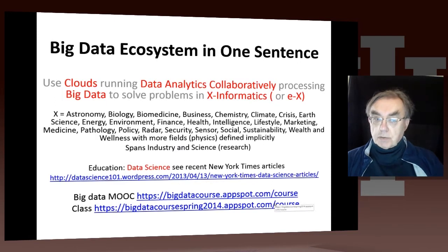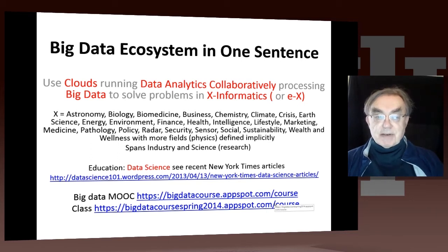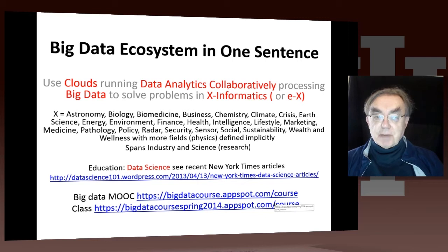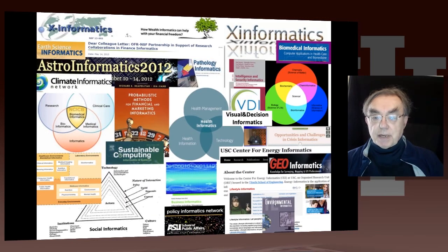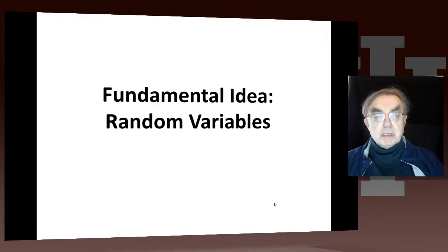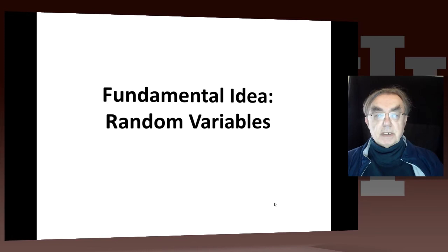As always, we're using clouds, running data analytics collaboratively, processing big data at 15 petabytes a year to solve problems in physics informatics — and we haven't been able to find that term on the web yet. So let's first discuss random variables in general, and in particular as applied to physics.